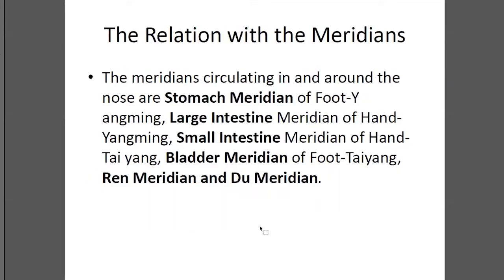And the meridian relationship around the nose: the large intestine meridian is pretty close around the nose. And the small intestine meridian is also close to the nose — especially with acupoints there. Stomach 18 is on the side of the nose, not too far away. And the bladder channel is at the root of the nose area.